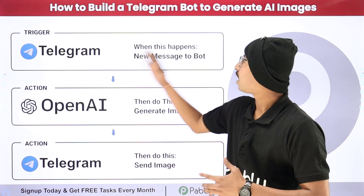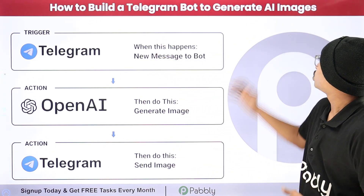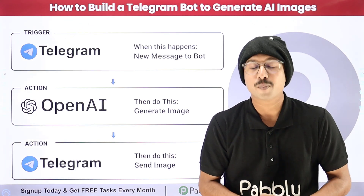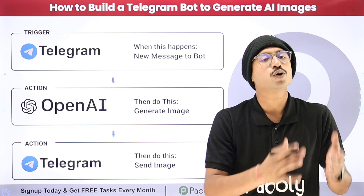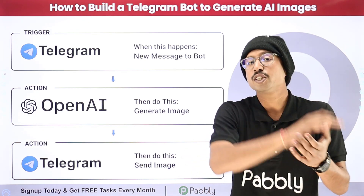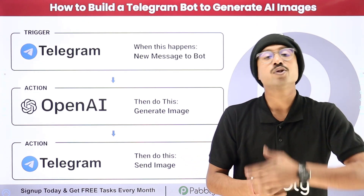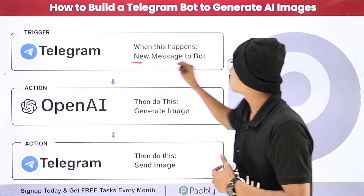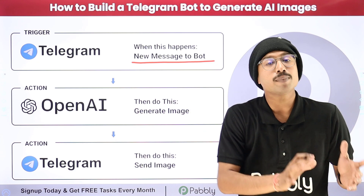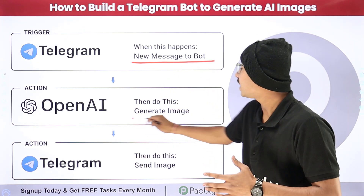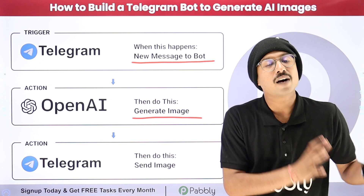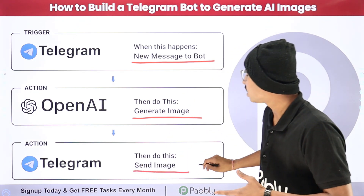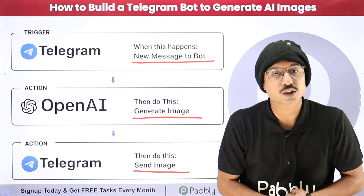In this video we are going to learn how to build a Telegram bot to generate AI images. You can create a Telegram bot and just send it a message or prompt for which you want to generate the image. Using this automation, as we send a new message to the bot, automatically the same message will be sent to OpenAI's DALL-E to generate AI images, and the generated image will be received as a reply from the same Telegram bot.